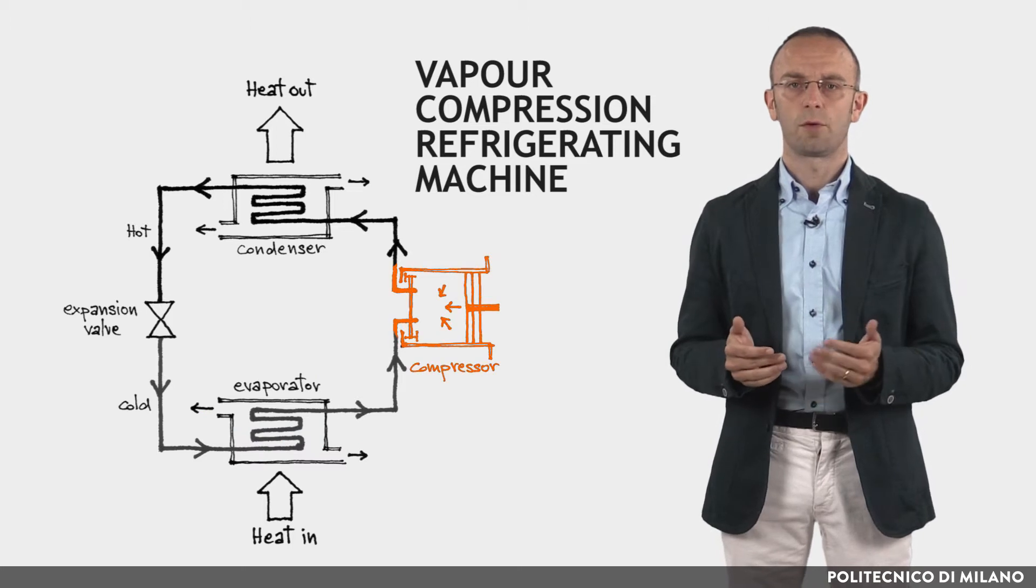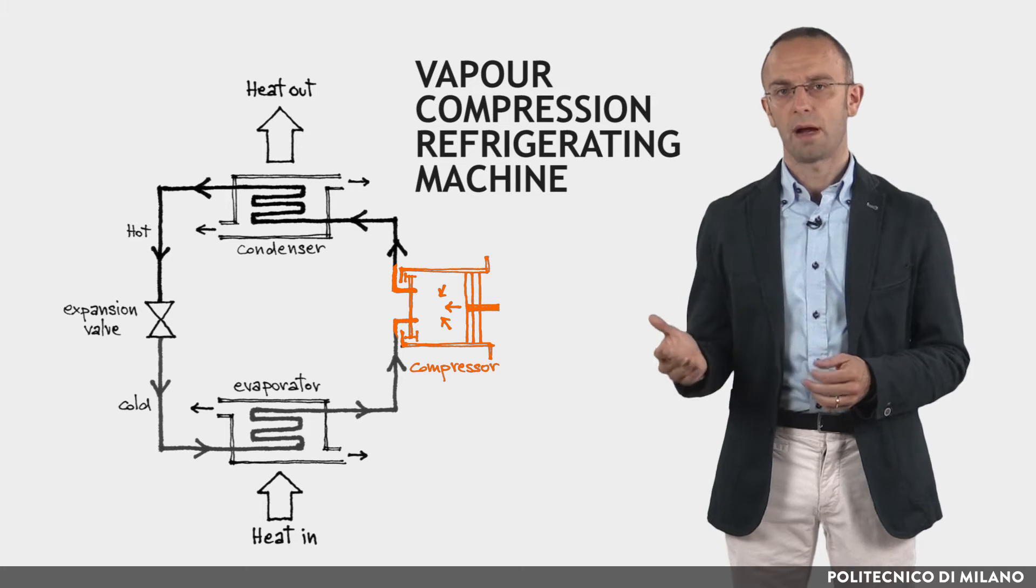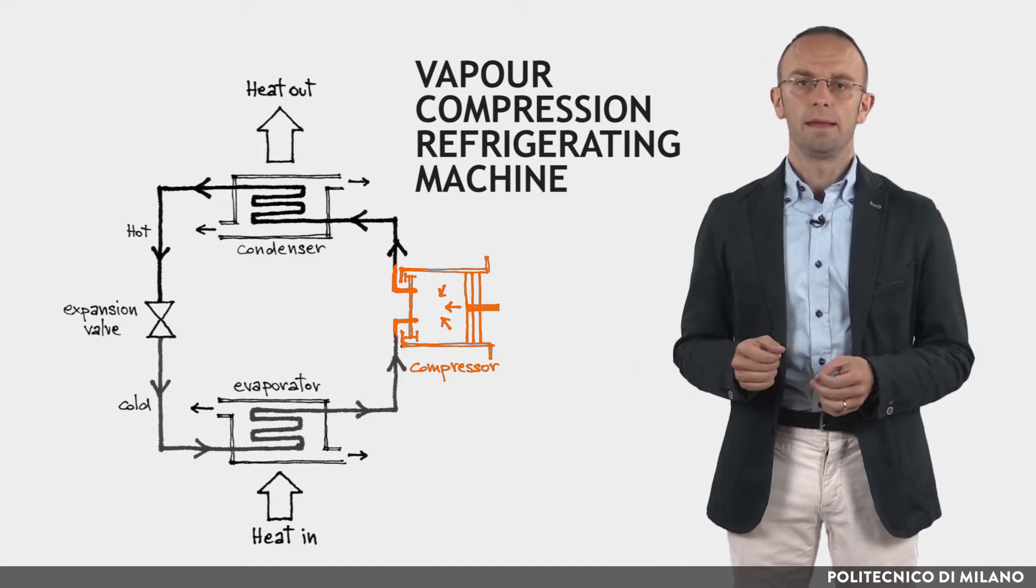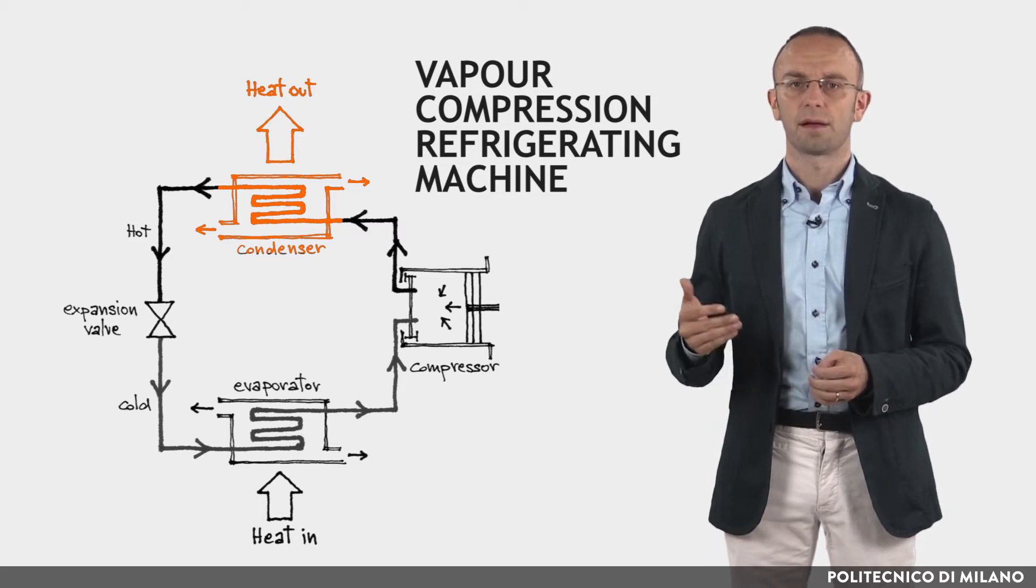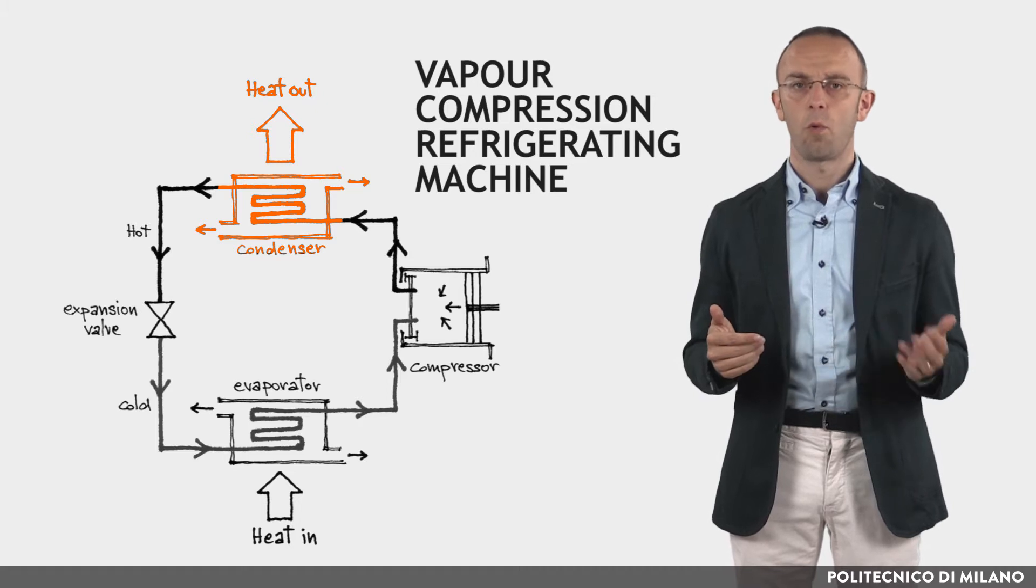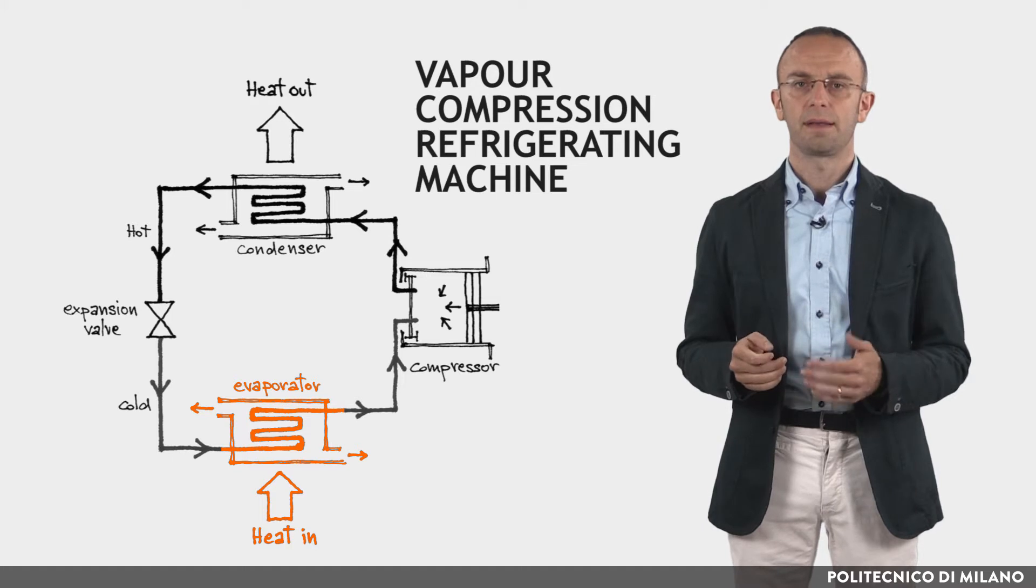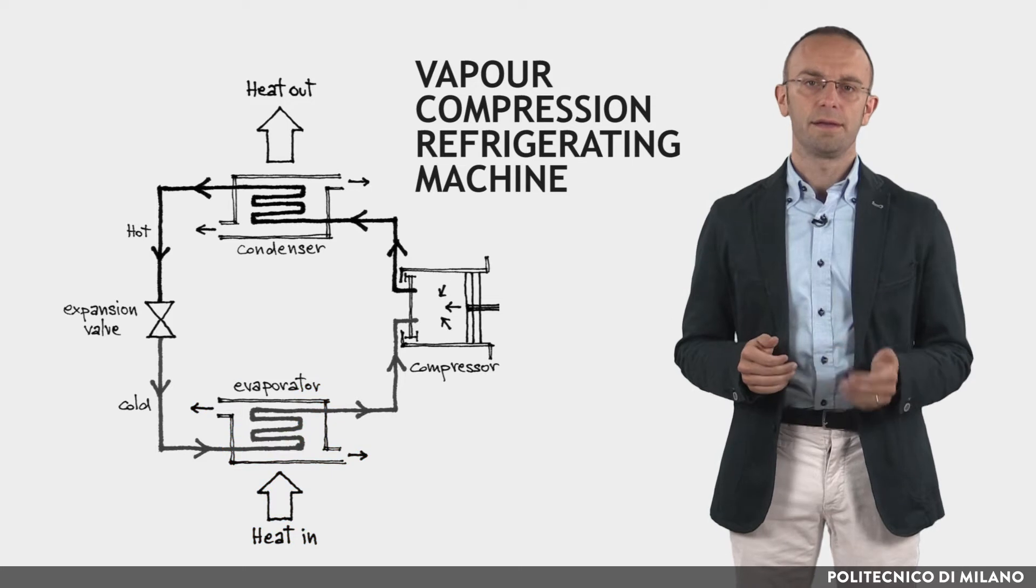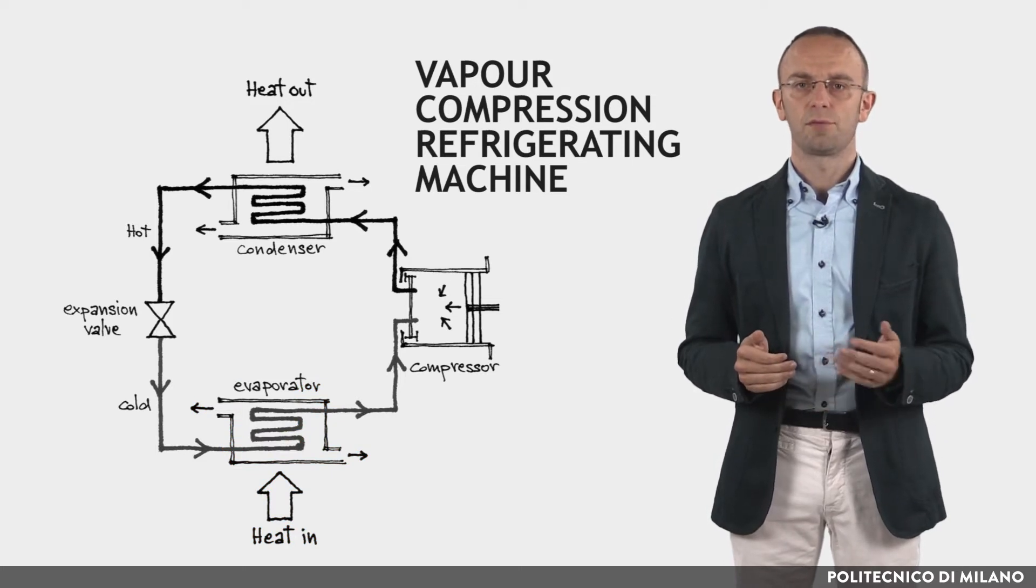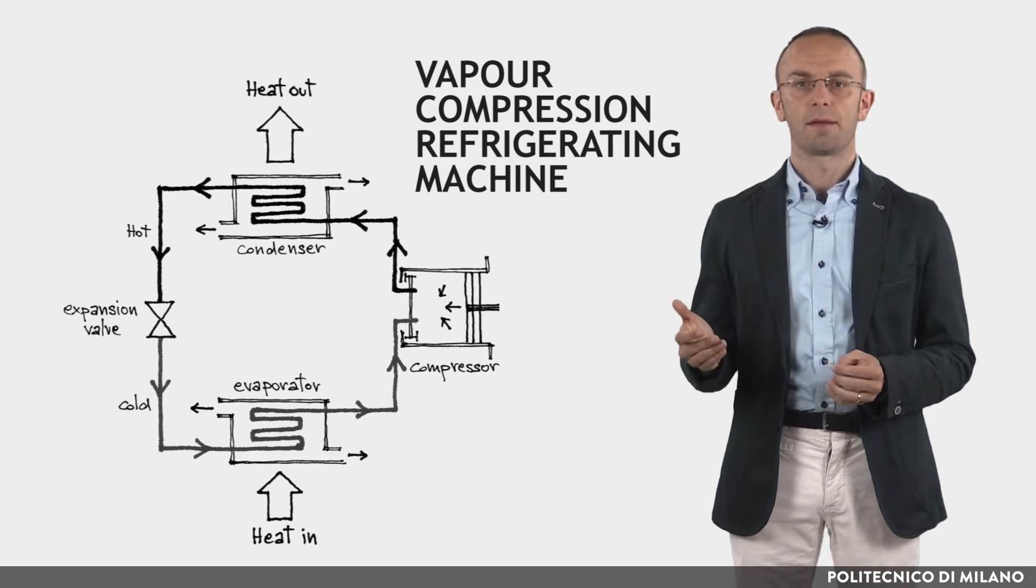The refrigerant enters the compressor as a vapor and is compressed to a higher pressure and consequent higher temperatures. In the condenser, the circulating refrigerant rejects heat from the system and the rejected heat is carried away by either water or air. In the evaporator, heat is subtracted from the environment by the evaporation of the liquid part of the cooled refrigerant mixture. The greater is the temperature difference between condenser and evaporator, the greater is the required pressure difference and consequently more energy is needed to compress the fluid.